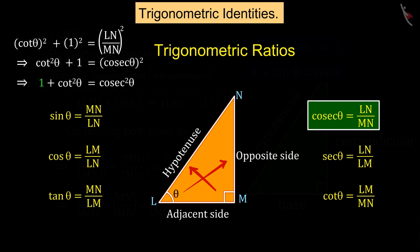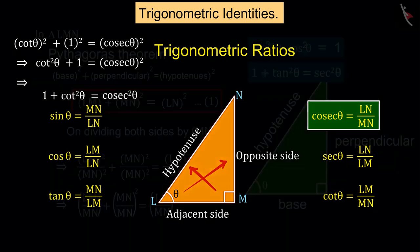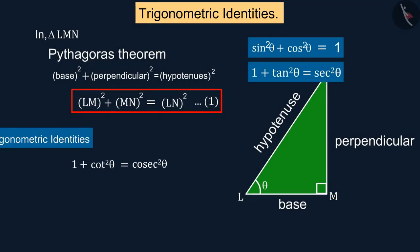The above equation gives us 1 + cot²θ = cosec²θ, which is a trigonometric identity, where θ is greater than 0 degrees and less than or equal to 90 degrees.